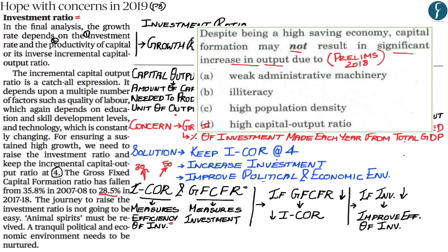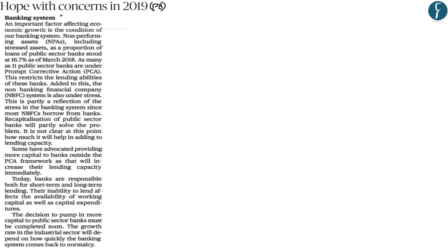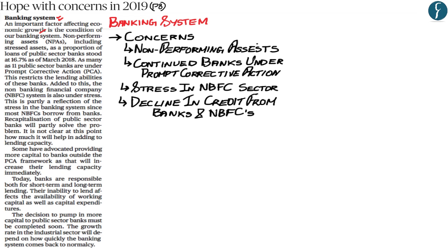The second concern raised by the author is with regards to the banking system of India. The banking system is an important factor affecting India's economic growth. The first concern is non-performing assets, where NPAs form as high as 16% as a proportion of loans of public sector banks. The second concern is that 11 public sector banks continue under the Prompt Corrective Action — a supervisory tool used by the Reserve Bank of India to improve the financial health of these banks.